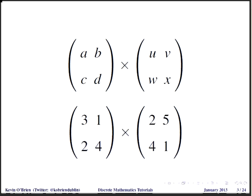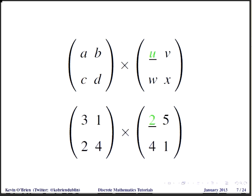Here I have some example values. I'm going to use this as a little example: a matrix 3, 1, 2, and 4 multiplied by a matrix with 2, 5, 4, and 1. So A directly corresponds to 3, B directly corresponds to 1, C corresponds to 2, and D corresponds to 4. Same goes for the other matrix: U corresponds to 2, V corresponds to 5, and W and X correspond to 4 and 1 respectively.